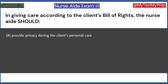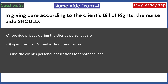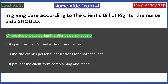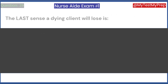In giving care according to the client's Bill of Rights, the nurse aide should: A. Provide privacy during the client's personal care. B. Open the client's mail without permission. C. Use the client's personal possessions for another client. D. Prevent the client from complaining about care. Answer: A. Provide privacy during the client's personal care.